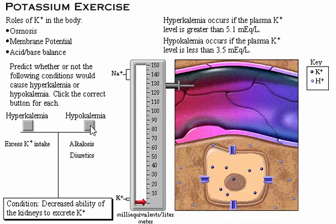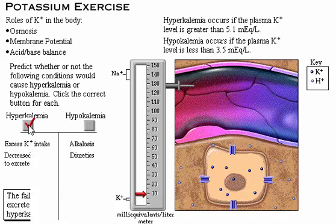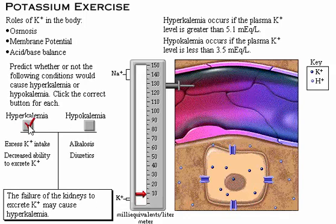Decreased ability of the kidneys to excrete potassium, such as occurs in renal failure, may cause the failure of the kidneys to excrete potassium, leading to hyperkalemia.